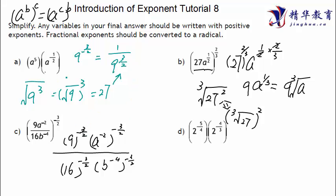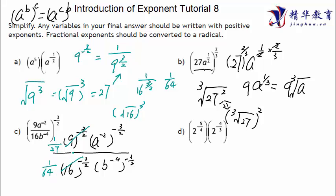For 16 to the power of negative three over two: similarly, it becomes 1 over 16 to the three over two. Square root of 16 is 4, and 4 cubed is 64. So this term equals 1 over 64.